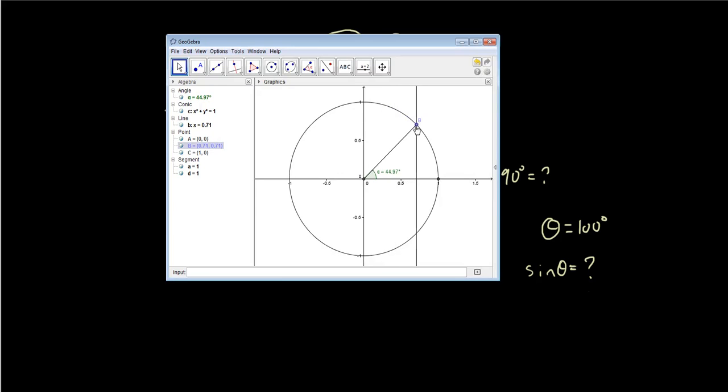And if you remember the definition of unit circle from our previous video, sine theta is equal to the y coordinate of point B, and cosine theta is equal to the x coordinate of point B.